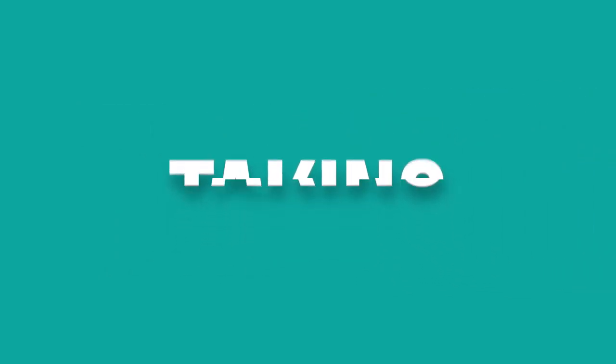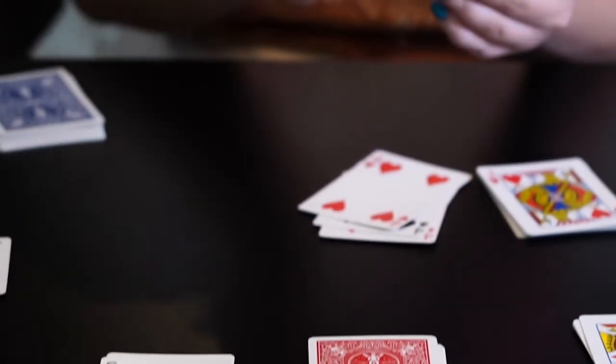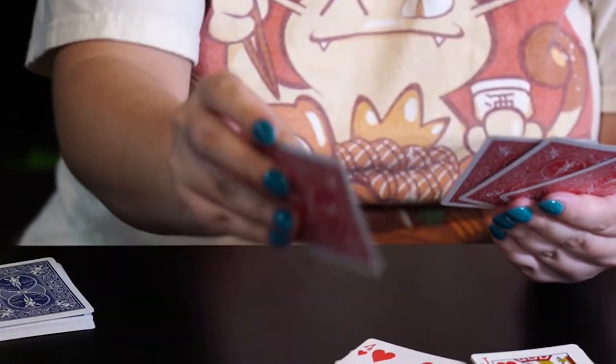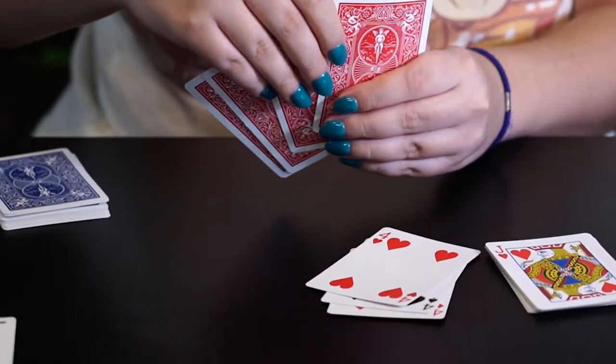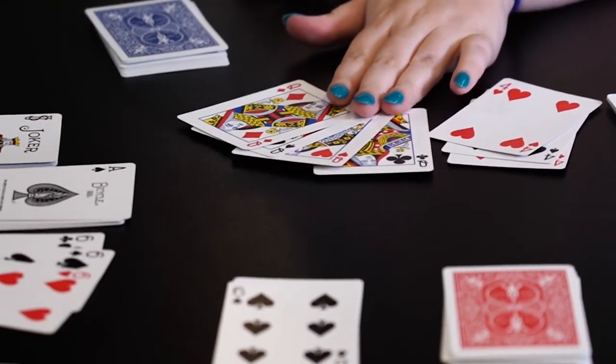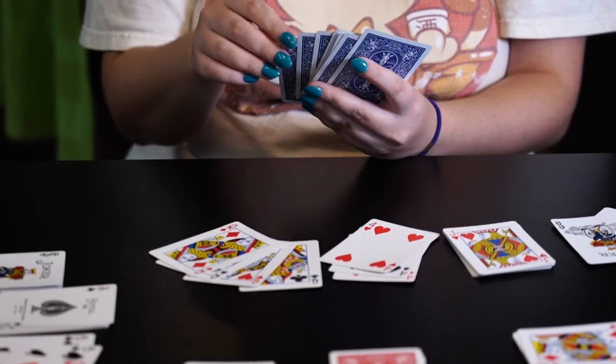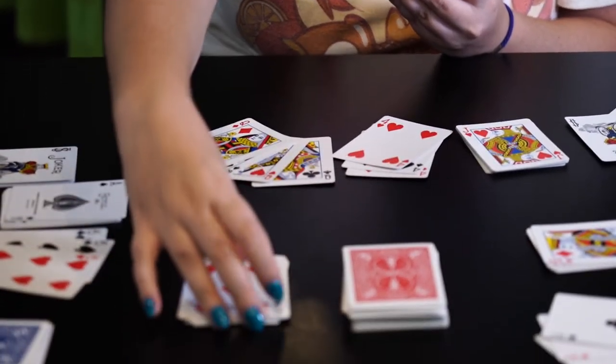Taking turns. A typical turn consists of: 1. Drawing two cards from the stockpile. 2. Melding cards, either starting a meld or adding to an existing meld. 3. Discard a single card to the top of the discard pile face up.